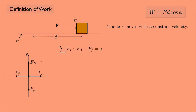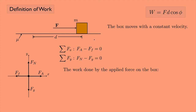Summing the forces in the x-direction: the applied force F_a minus the friction force F_f equals zero, since the box is moving at constant velocity and is not accelerating. Summing forces in the y-direction: the normal force minus the weight also equals zero. Now let's calculate the work done by each force on the box. Work is always described as done by some force on some object.